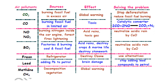Methane is produced by the decomposition of vegetation and organic waste — when plants or organic material decay, they release methane. Methane can also cause global warming, and we are still not fully able to overcome the problem of methane emissions. These are the main sources of air pollution, their effects, and how we can address them.